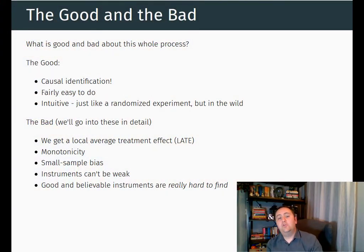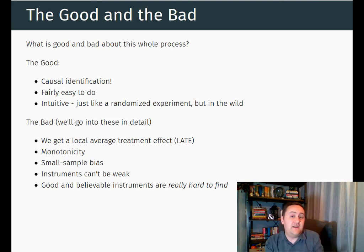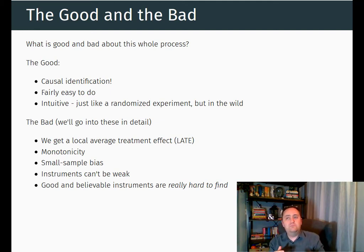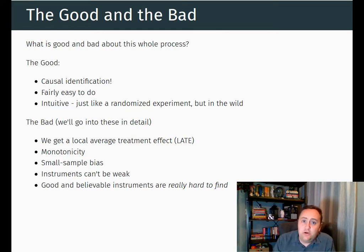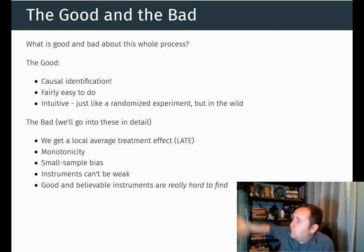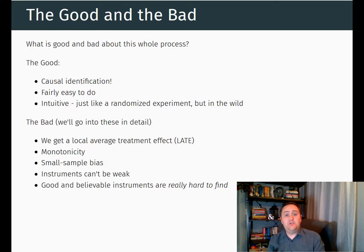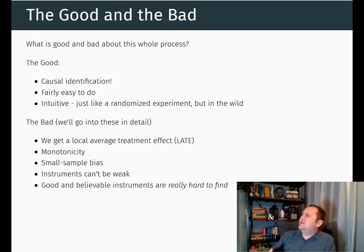One thing that doesn't work well is that we get a local average treatment effect. The local average treatment effect means we are weighting the effects more heavily among people who are definitely affected by the instrument. Why is this a bad thing? Well, it generally doesn't map super well to the actual effect that we want. We might want to know what's going to happen if we change something about the world — for example, if you go into the military, what's going to happen to your earnings? What if we forced everybody to go into the military? Then we'd want to know the effect for the average person — but that's not what the local average treatment effect gives us. We might also be interested in people who don't currently go into the military, and that local average treatment effect doesn't give us that either.